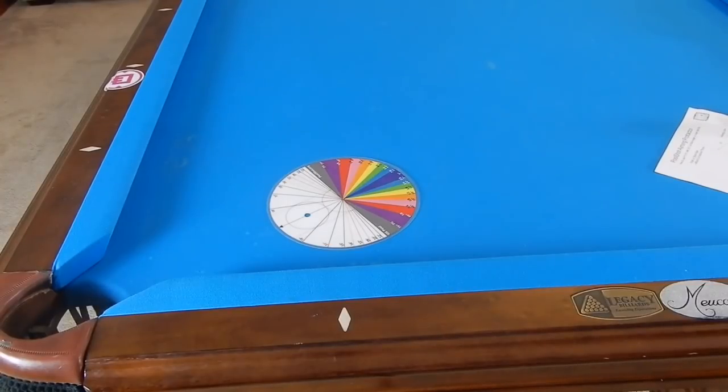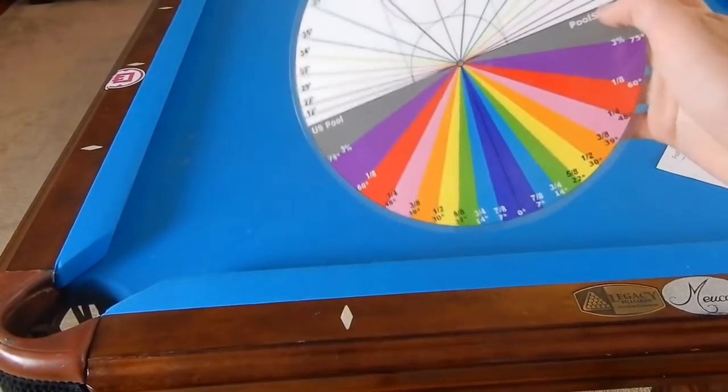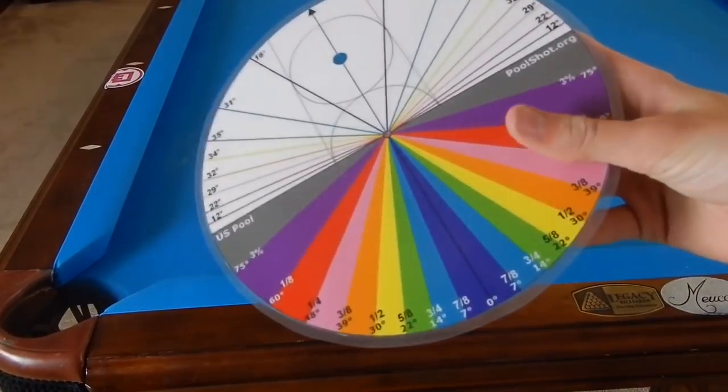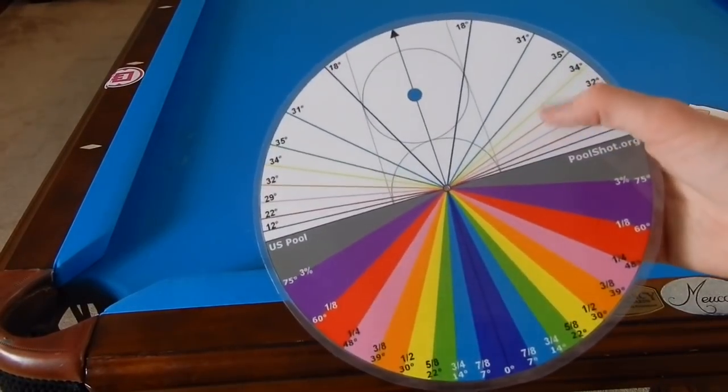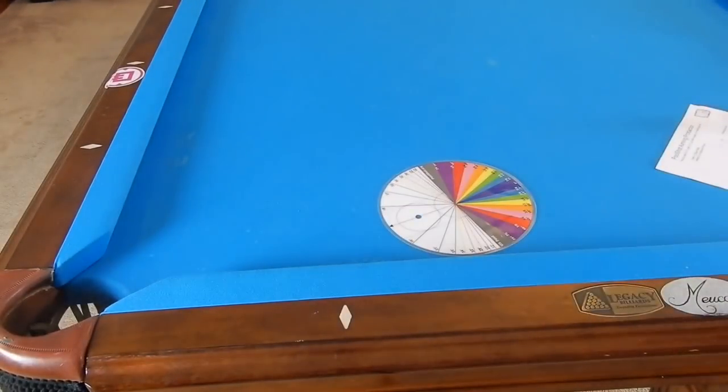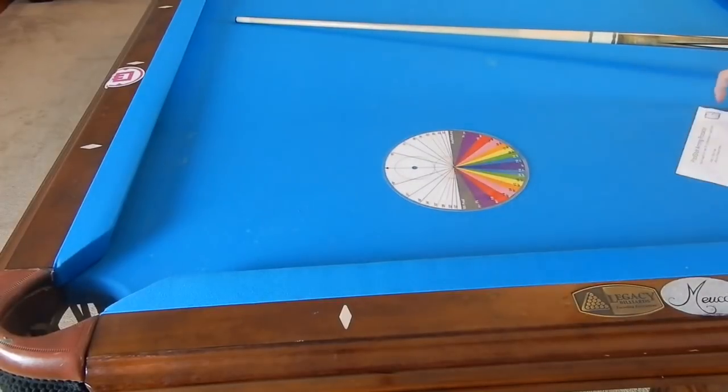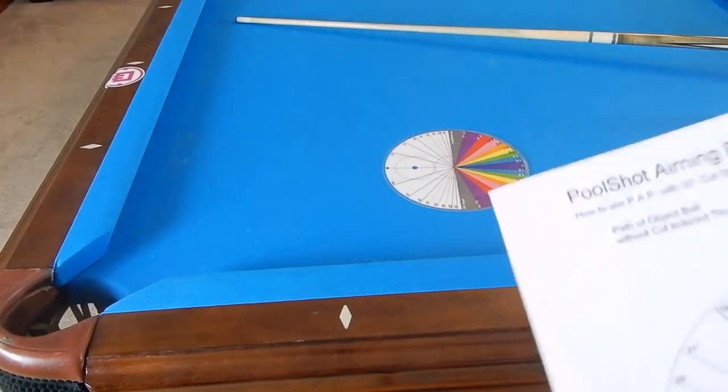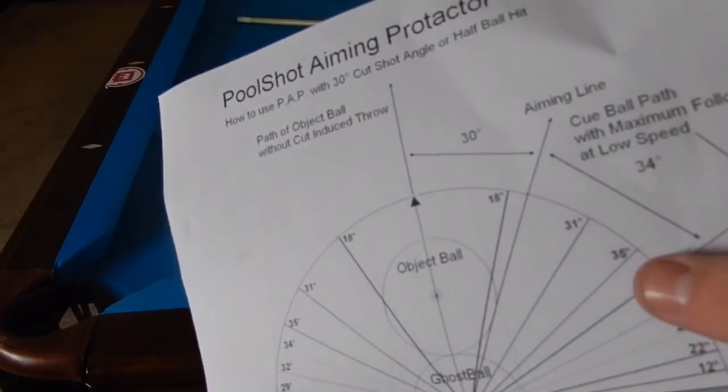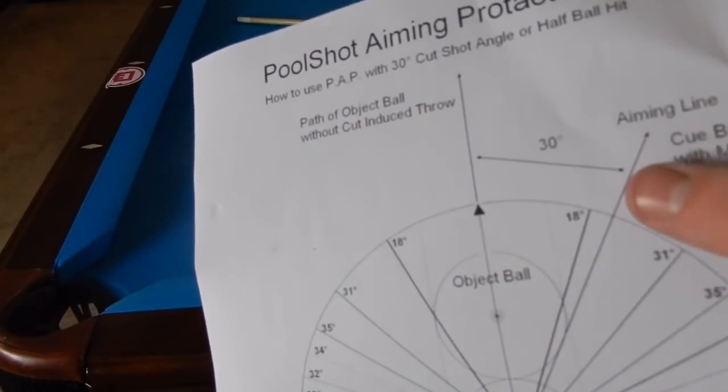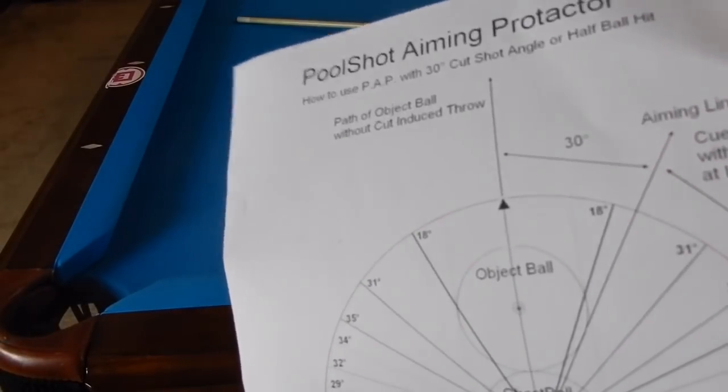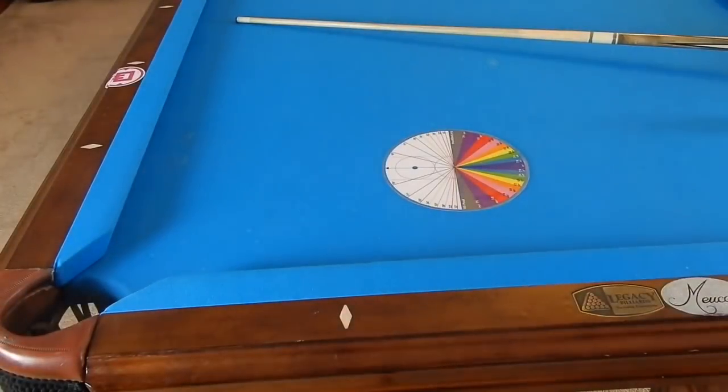Now let's talk about topspin or follow. This half is the tangent line, the bottom is the draw line, and then this is the follow line. When you apply topspin obviously it goes forward. The sheet says cue ball with maximum follow at low speed is usually between 19 degrees and 34 degrees. Maximum follow is 34 degrees at a slow speed.